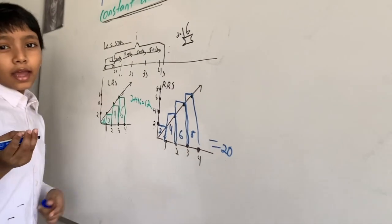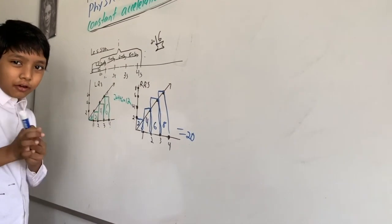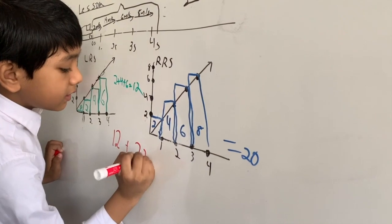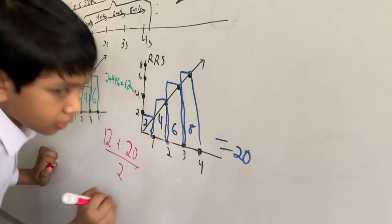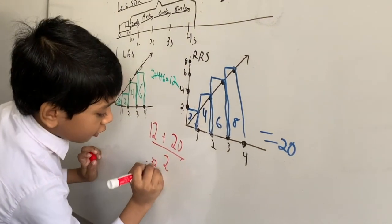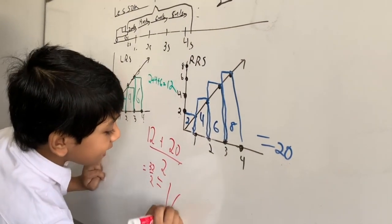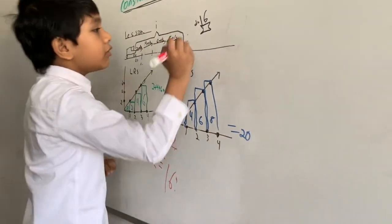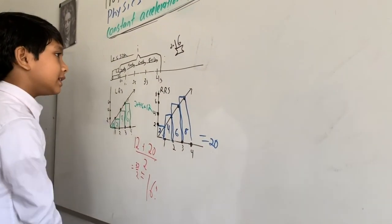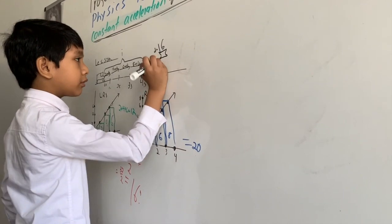So now you can probably see what we're going to do. 12 plus 20 over 2. What is that? That's 32 over 2. 16. So now we have a completely strong foundation built on our answer.